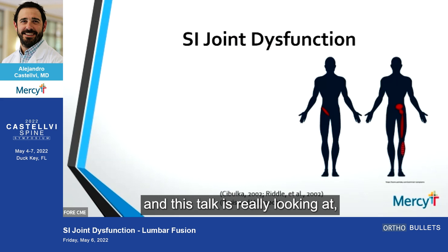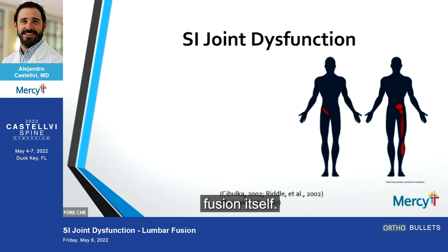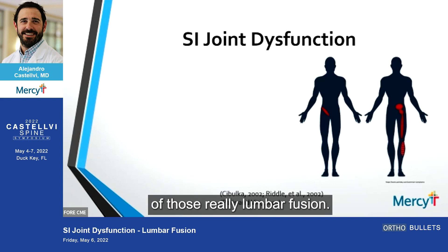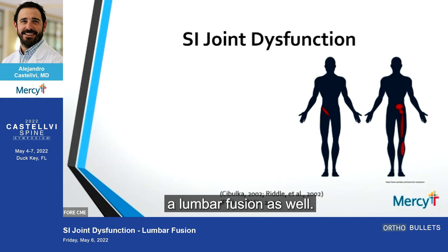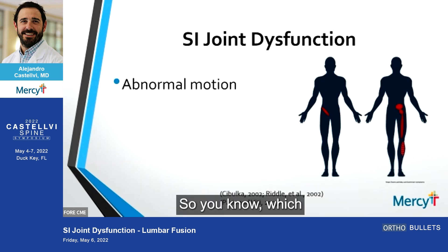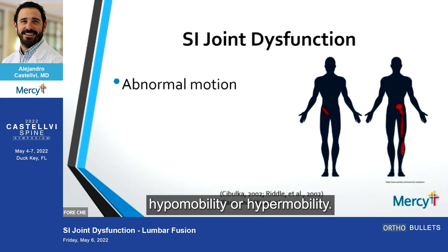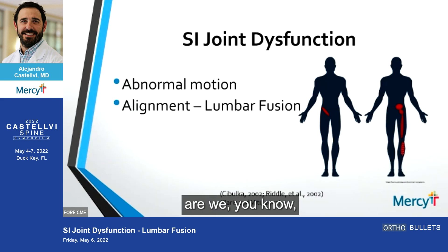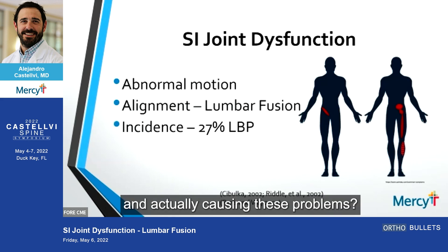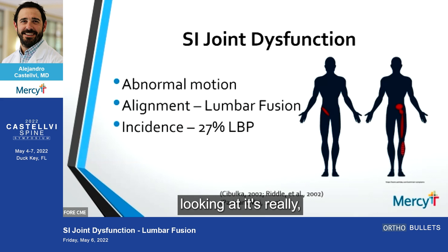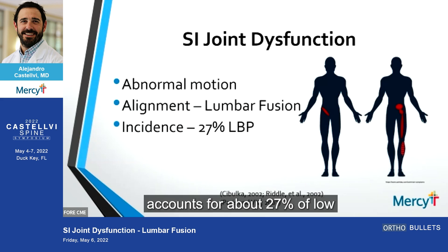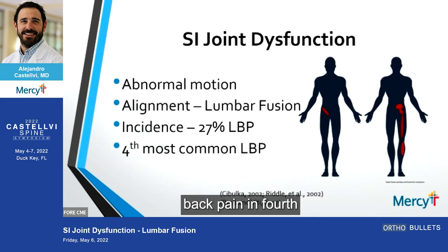SI joint dysfunction — this talk is really looking at it in relation to lumbar fusion itself. I'm going to touch on both: lumbar fusion and patients who obviously haven't had a lumbar fusion as well. It's related to abnormal motion, whether that's hypermobility or hypomobility. Are we not paying attention to the overall alignment of the patient and actually causing those problems? The incidence accounts for about 27 percent of low back pain and is the fourth most common cause.